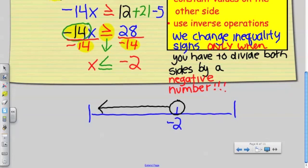Now, I've drawn an open circle around the negative 2. Is that correct? No. Because this is x is less than and equals negative 2. So that means I have to color in my circle.